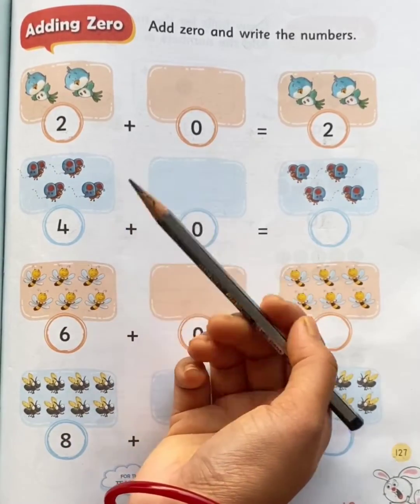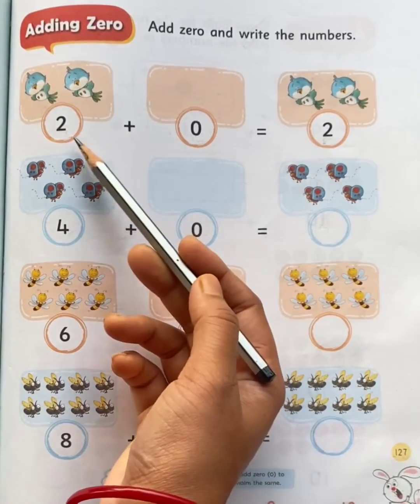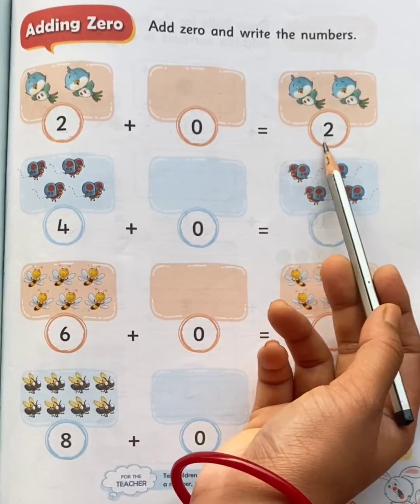Children, when we add zero to a number, the number remains the same.